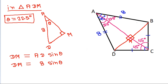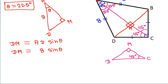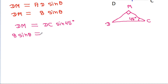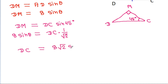So in triangle DMC, this angle is 90 degrees, this angle is 45 degrees, and this angle is 45 degrees. So DM will be equal to DC times sin 45 degrees. And since DM is 8 sin theta, that equals DC times sin 45 degrees which is 1 over root 2. So DC is equal to 8 root 2 sin theta.